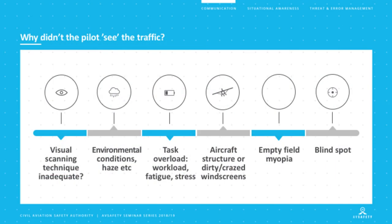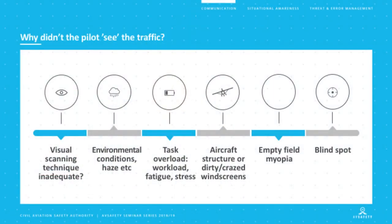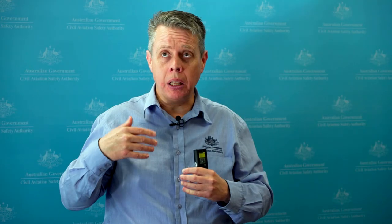Why didn't the Foxbat see the other traffic? There could be many reasons. Visual scanning technique — was the pilot looking out into space or actually conducting a disciplined scan across the visual horizon? We're in a dynamic environment: things rarely stay the same. Environmental conditions — cloud, smoke, haze, pollution, rain, even a dirty windscreen — can all impede lookout. Task overload is very real: it's important to develop the skill of managing flight tasks without compromising the ability to keep eyes outside the cockpit.